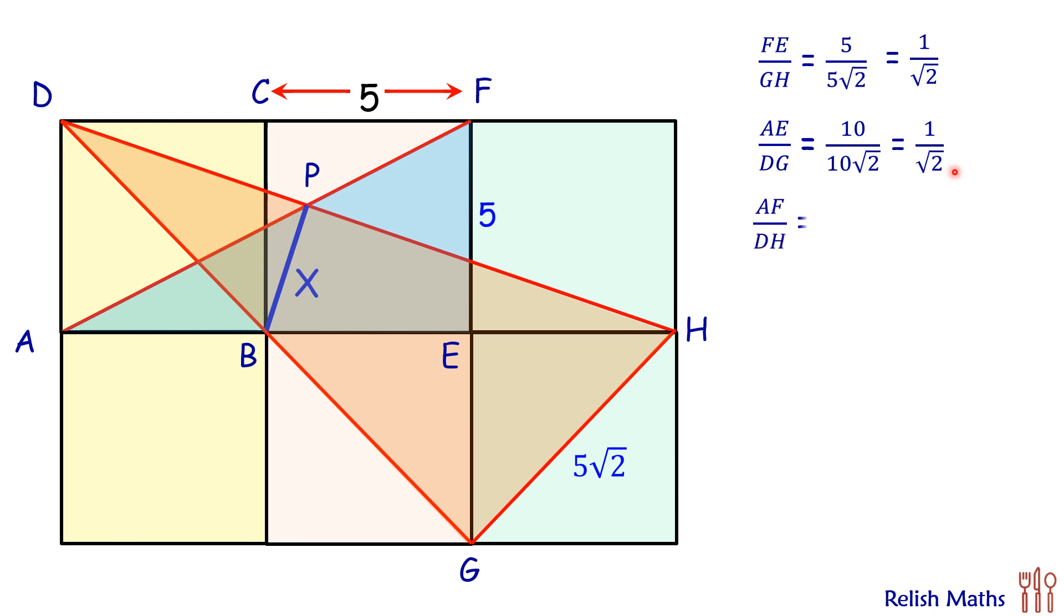The third side which we are comparing is AF upon DH. AF, this is a right angle triangle with 10 centimeters and 5 centimeters, so AF will be 5√5 centimeters. And DH is the hypotenuse for a triangle with sides 5 and 15 centimeters, so DH will be 5√10 centimeters. So the ratio will be 5√5 upon 5√10, which is 1 by √2. As the ratio of all sides are equal, these triangles are similar to each other.